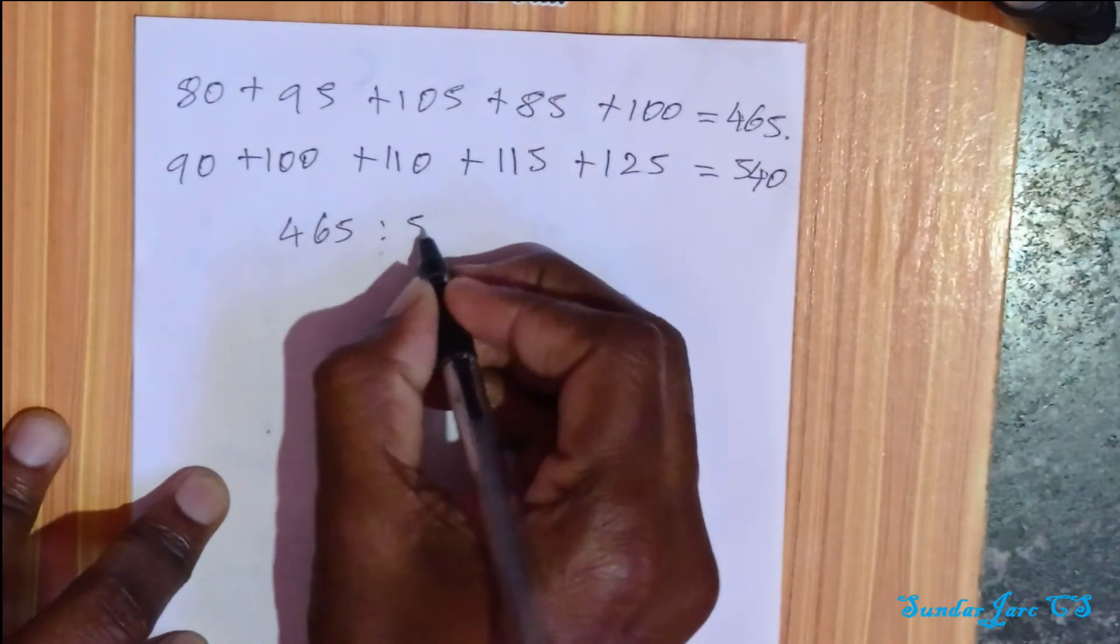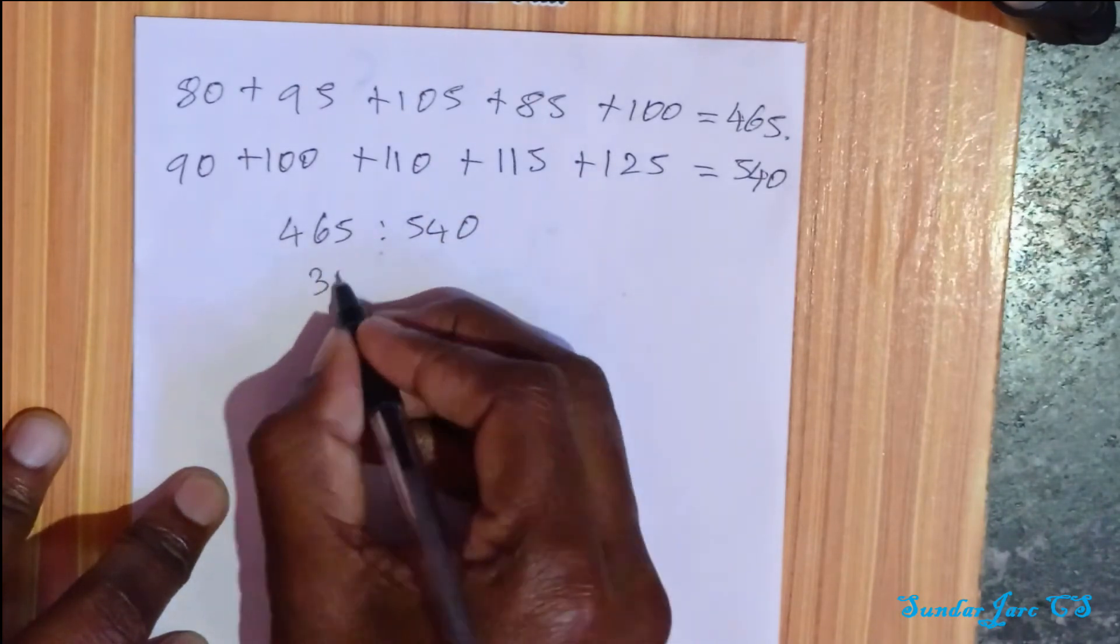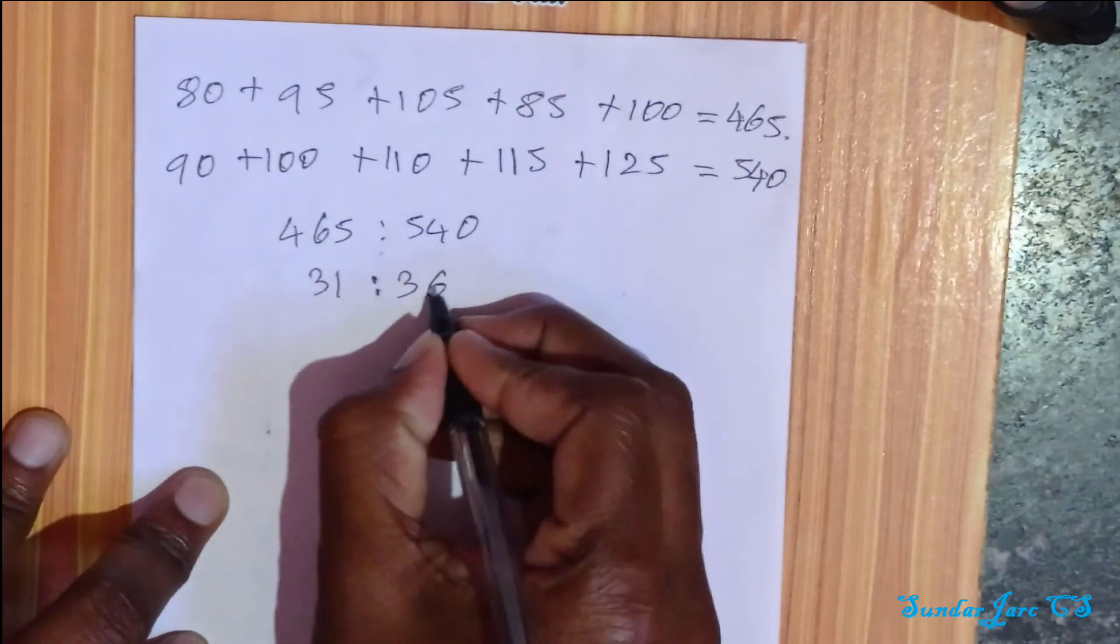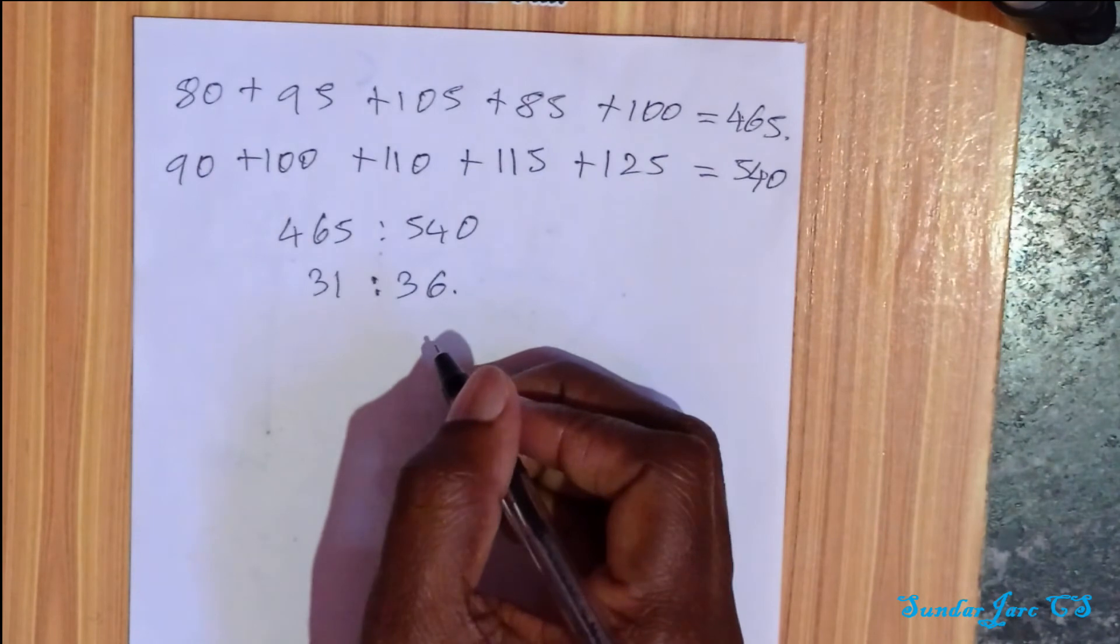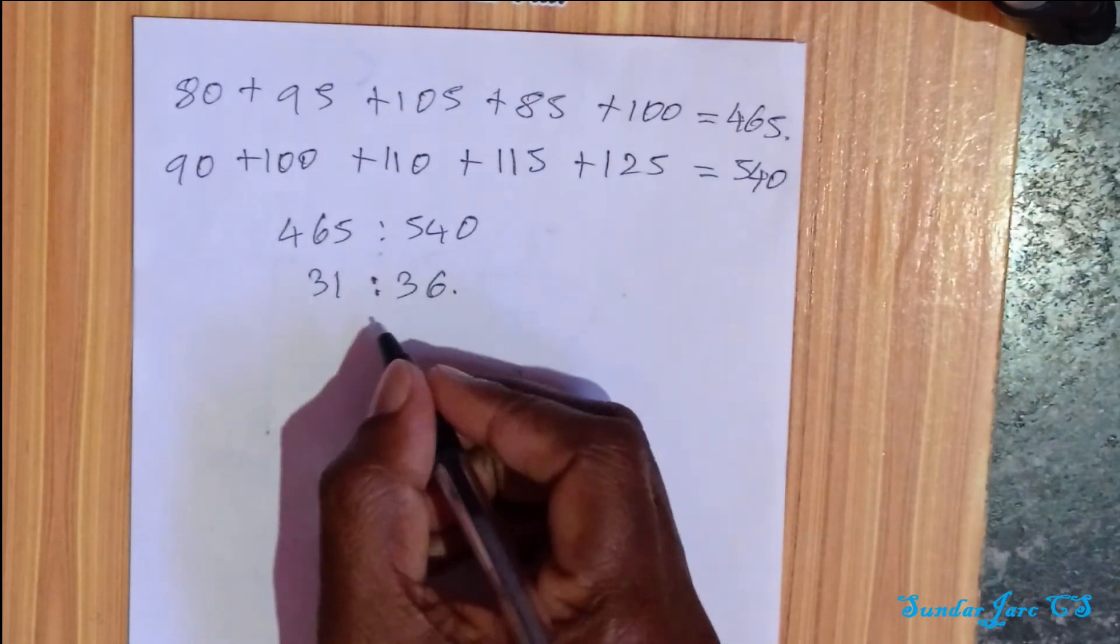465 is to 540 equals 31 is to 36. So option 4 is correct.